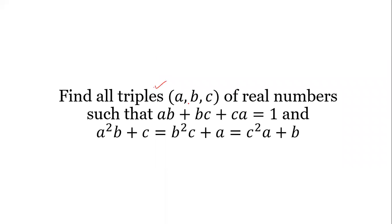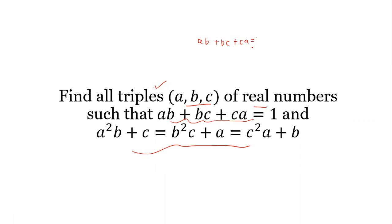Find all triples of real numbers such that these two conditions hold. The first condition is AB plus BC plus CA is equal to 1, and the second condition is A squared times (B plus C) equals B squared times (C plus A) equals C squared times (A plus B).